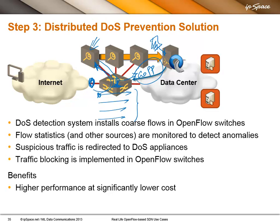Of course, if someone manages to get into the control plane network, or if you use in-band control plane, or if the switch forwards data plane traffic into the control plane network, then you have a problem. But that's a problem of bad design, not a problem of the architecture.